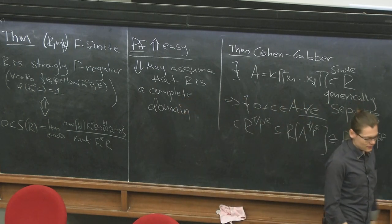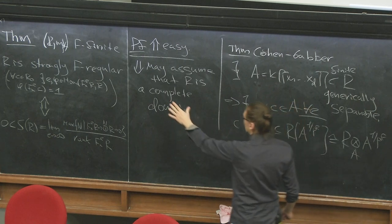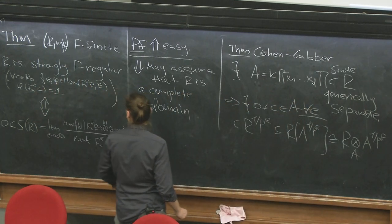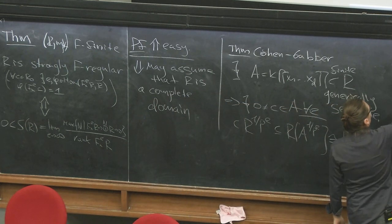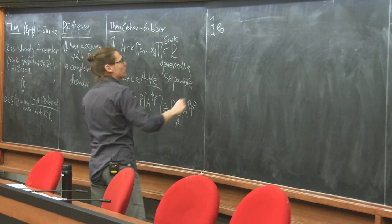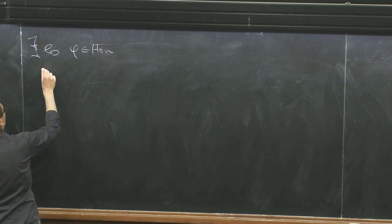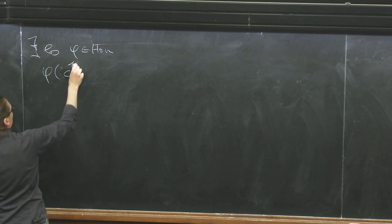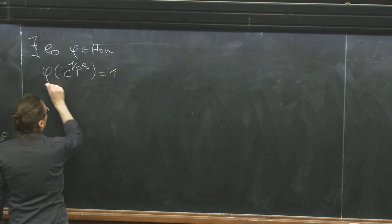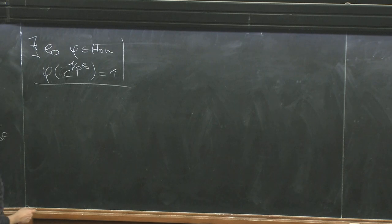So what can we do with this? We have a magic constant C, an element inside A provided by Cohen-Gabber's theorem. Now we assume R is strongly F-regular, so let's use the definition for this element C. We find some integer E₀ for which the condition holds — there is a map φ in Hom such that φ of F applied to one's p^E₀-th root equals 1. From this data, we will construct splittings to show the signature is positive by constructing a sufficiently large number of free summands.